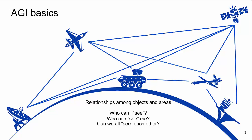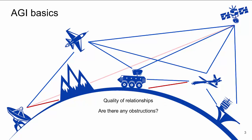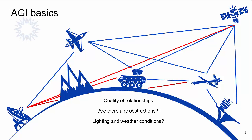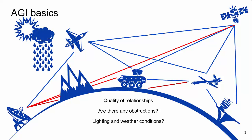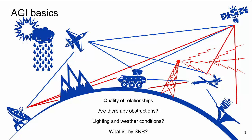Then we introduce constraints. Constraints limit the ability for one object to see another, such as the Earth blocking line-of-sight visibility between the sensor and the UAV. These added constraints determine the quality of the relationship between objects. For example, we may add a terrain constraint, further limiting the visibility of a sensor to other objects. Different lighting or weather conditions may also affect the quality of the relationships. Another example might be that a jammer is present in my area of interest, keeping me from communicating to my other objects of interest.